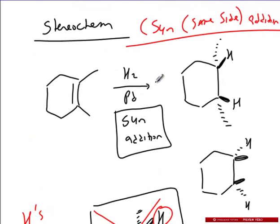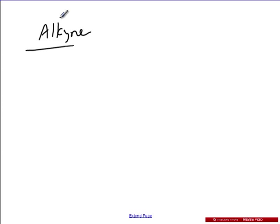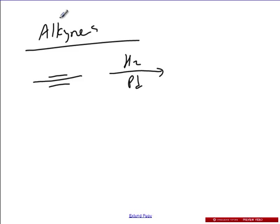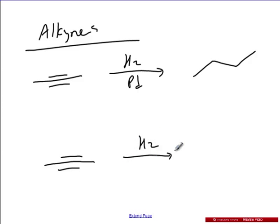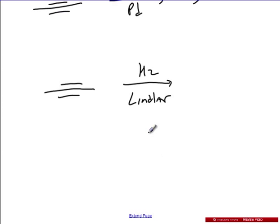Now this is all good to learn, and like I said we're going to learn so much more about this in Chapter 8. But there's another point to make: alkynes have some unique reaction characteristics. So if you have an alkyne and you treat it with H2 and palladium, no surprise, it's going to become an alkane. But it turns out that you could take an alkyne and treat it with what's known as a partial reducer — partial hydrogenation — using a special catalyst called Lindlar, where the alkyne will only take two Hs and not four.